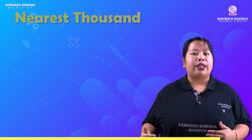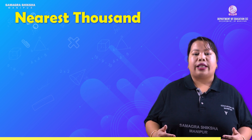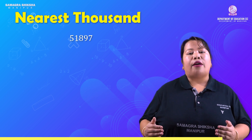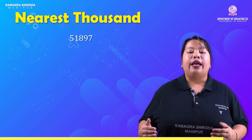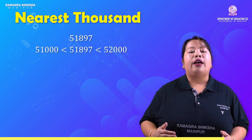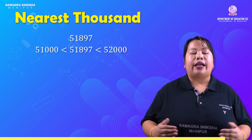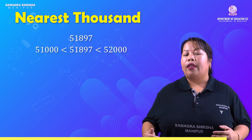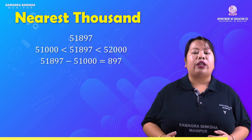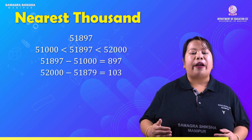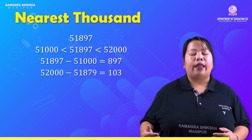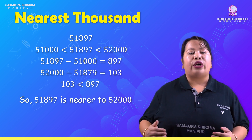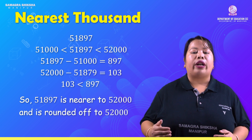Now, nearest thousand: for 51,897. 51,897 is between 51,000 and 52,000. 51,897 minus 51,000 gives 897; 52,000 minus 51,897 gives 103. Since 103 is smaller than 897, 51,897 is nearer to 52,000. So it is rounded off to 52,000.